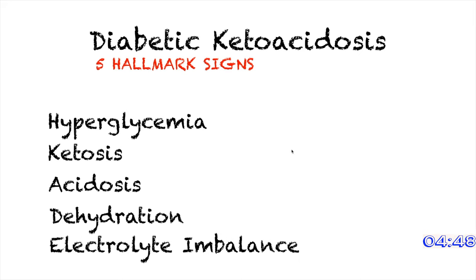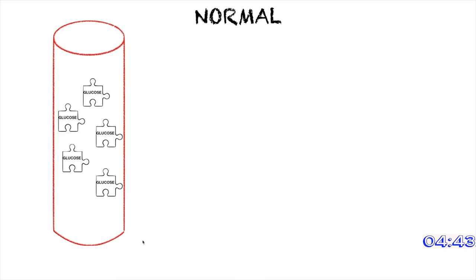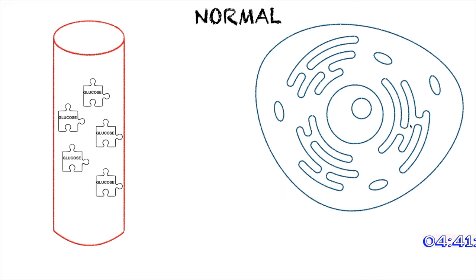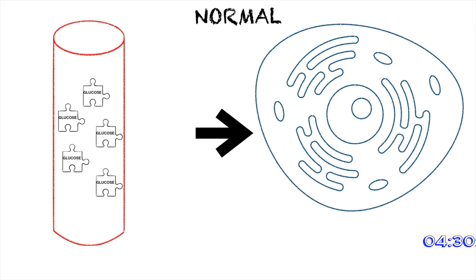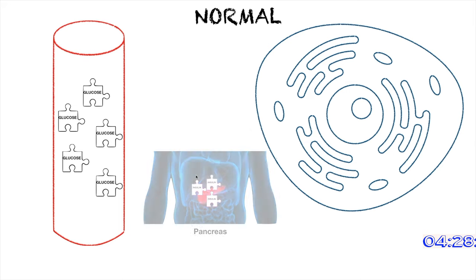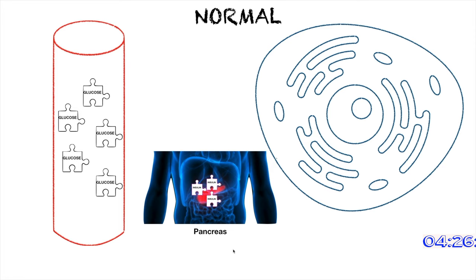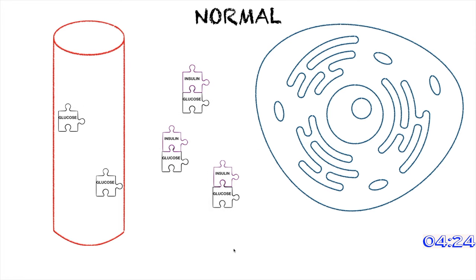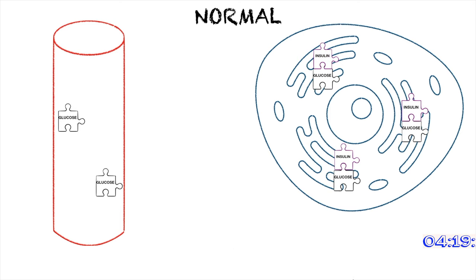But first, let's talk about the pathophysiology of DKA. Normally, we have glucose in our bloodstream. Our cells need glucose to function properly and to get energy. For this to happen, our glucose needs to get transported from the bloodstream into the cell. This is made possible by the insulin that is secreted in the pancreas — it binds to glucose, which allows the transport of glucose into the cell. Once the glucose is in the cell, then we have energy.